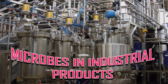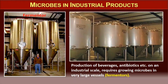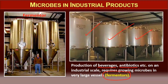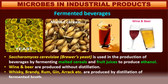Now let's move to microbes in industrial production — production of beverages, antibiotics, etc. on an industrial scale requires growing microbes in very large vessels called fermenters. Saccharomyces cerevisiae, also known as brewer's yeast, is used in the production of beverages by fermenting malted cereals and fruit juices to produce ethanol. Wine and beer are produced without distillation, whereas whiskey, brandy, rum, gin, arrack, etc. are produced by distillation of fermented broth.